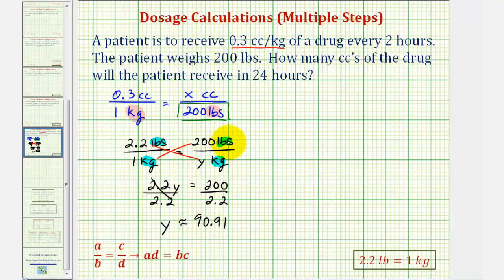Which means 200 pounds equals 90.91 kilograms, which we can now substitute for 200 pounds. Again, since y equals 90.91, 200 pounds is equal to 90.91 kilograms, so we can perform the substitution here.